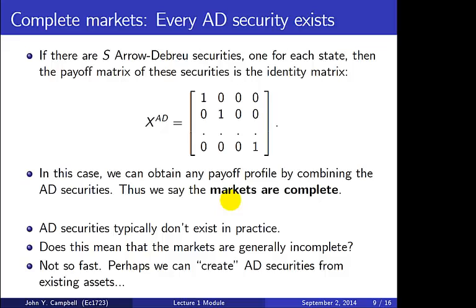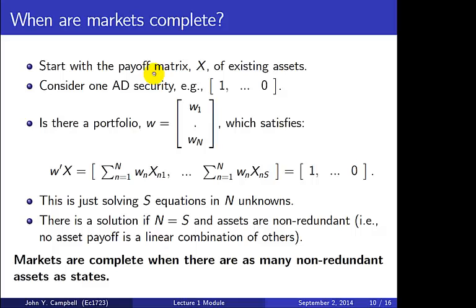In practice, you won't see securities that look exactly like this — they don't actually exist. Does this mean markets are generally incomplete? Not necessarily. It may be possible to create Arrow-Debreu securities from existing assets. Suppose we have a bunch of arbitrary assets with payoff matrix X, and we ask whether we can combine them to artificially construct an Arrow-Debreu security — say the first one, which pays one in state 1 and zero otherwise.